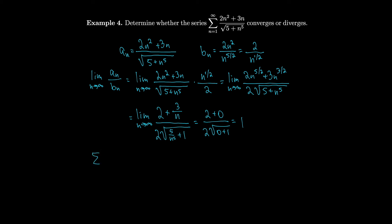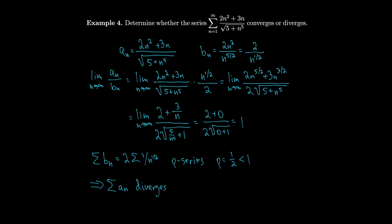So we take a look at what happens to our b_n's: that's just 2 times the sum of 1/n^(1/2), which is a p-series with p = 1/2, which is smaller than 1. Because p is smaller than 1, we know it diverges. So that means that the a_n's also diverge by the limit comparison test.